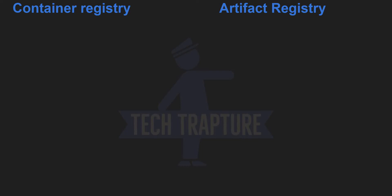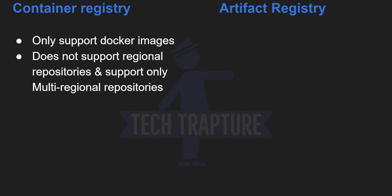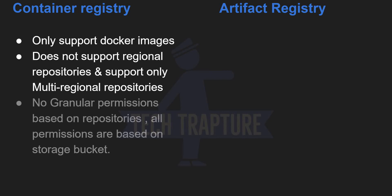Container Registry only supports Docker images — we cannot store any artifacts or packages in it, and we cannot create our own customized repositories. It does not support regional repositories; the repositories created are multi-regional. For the US it creates gcr.io, for Europe it creates eu.gcr.io. We cannot create regional repositories like us-central1 — that is a limitation of Container Registry.